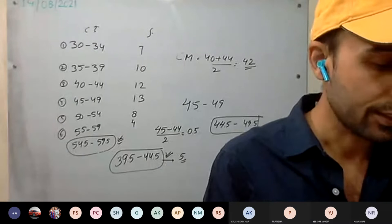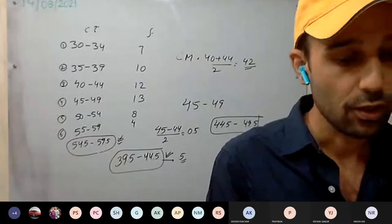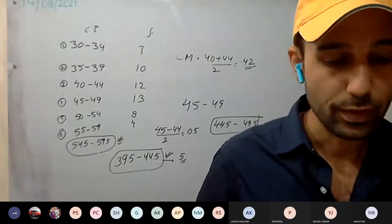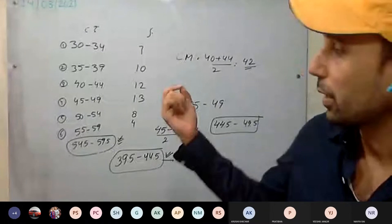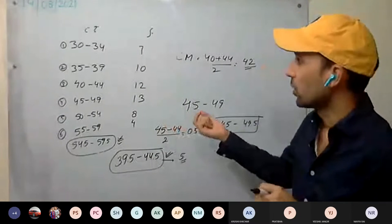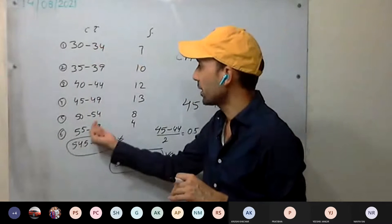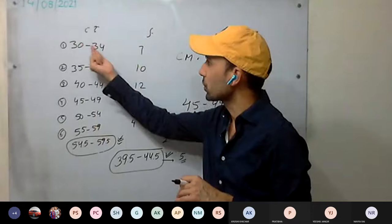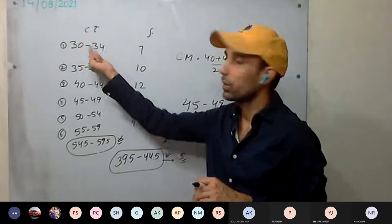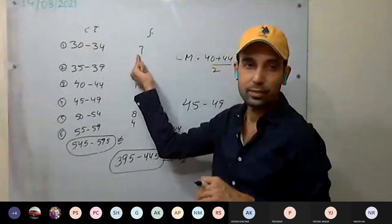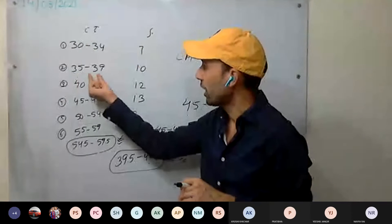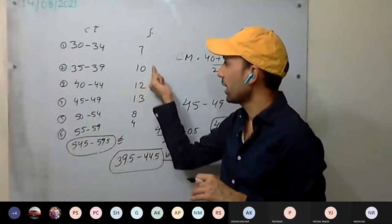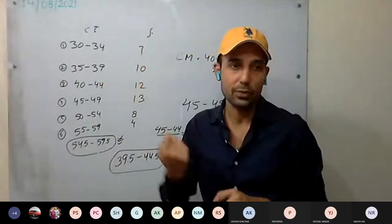Now we discuss cumulative frequency along with the eighth question. We have discussed frequency so far — it is the particular number of times a value is obtained. For example, consider these as the marks of students: 7 students scored between 30 and 34, and 10 students scored between 35 and 39, including those boundaries.